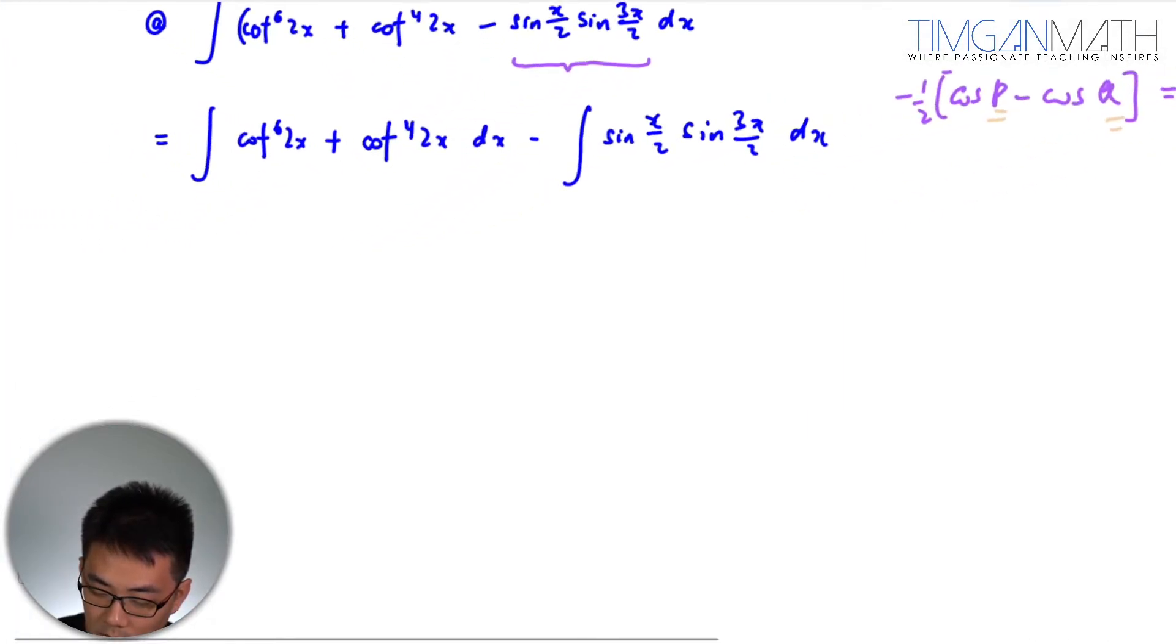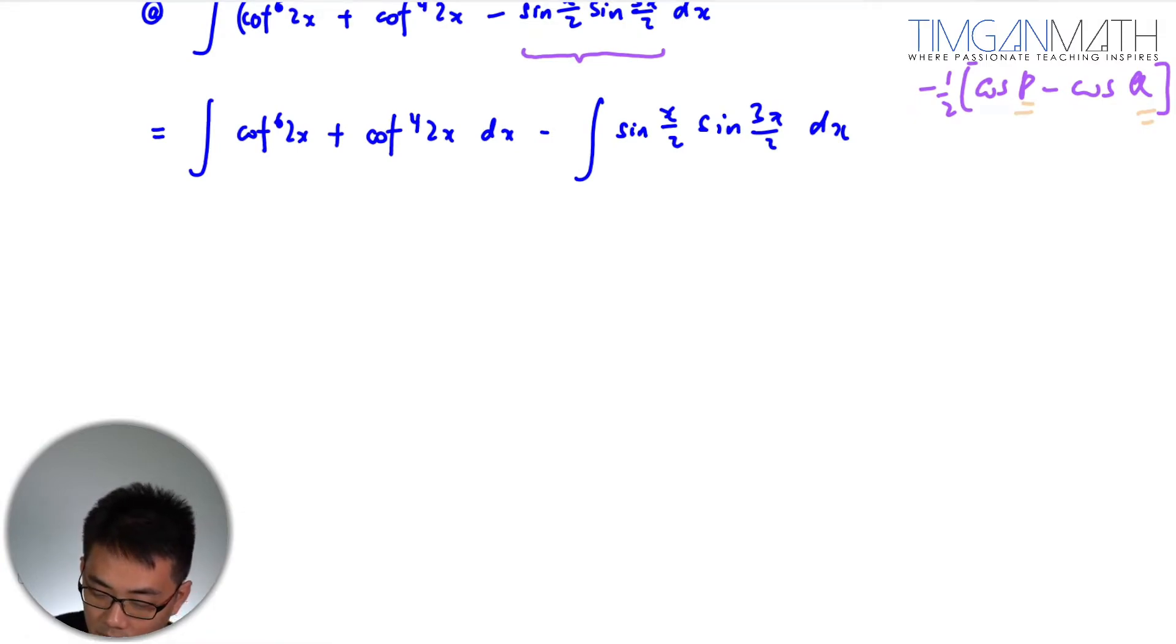Now this one here what I'll suggest is just factorize the cot to the power 4 out first. I will see what we'll get: cot about 2x plus 1 dx.